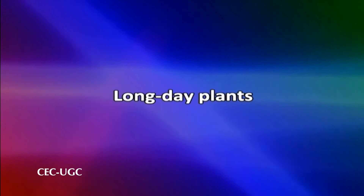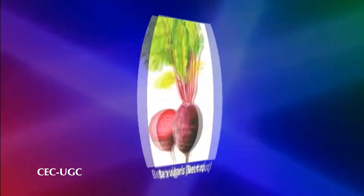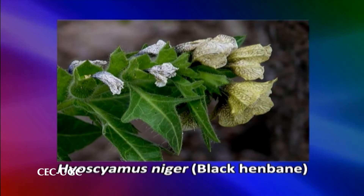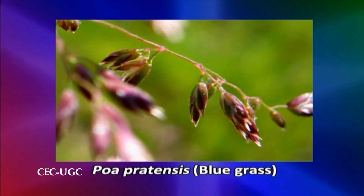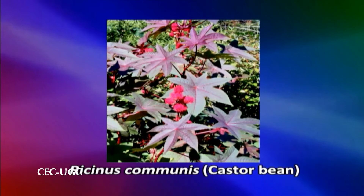Long day plants: flowering occurs only in long days (qualitative long day plants) or is accelerated by long days (quantitative long day plants). Flower initiation is promoted by day lengths longer than a critical day length, which differs from species to species. Such plants are also known as short night plants. Examples of qualitative long day plants are Beta vulgaris (beetroot), Hordeum vulgare (barley), Hyoscyamus niger (black henbane), and Spinacia oleracea (spinach). Examples of quantitative long day plants are Lactuca sativa (lettuce), Poa pratensis (bluegrass), and Ricinus communis (castor bean).